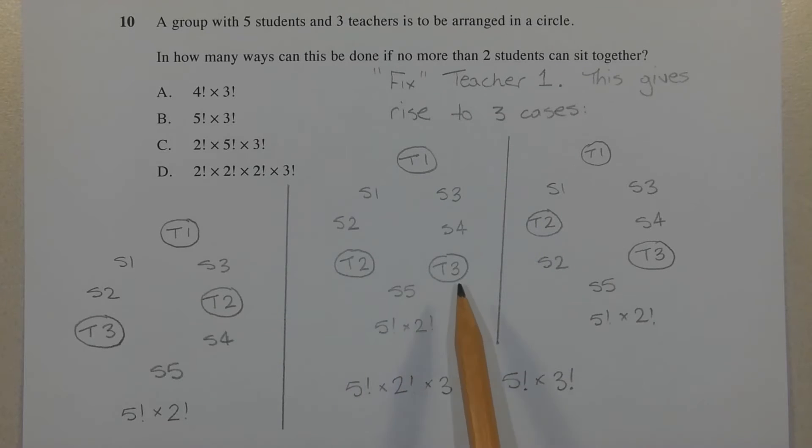Now the number of arrangements in this particular configuration is 5 factorial, for the 5 factorial ways of arranging the students, times 2 factorial, which is the number of ways of arranging teacher 2 and teacher 3, since those two can be swapped around.